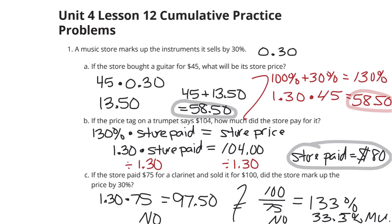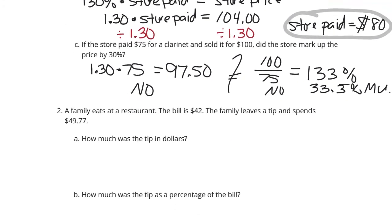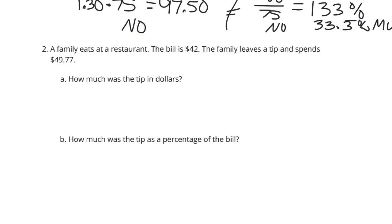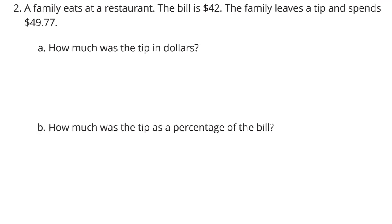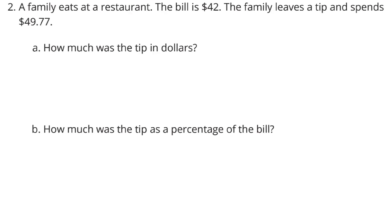Let's move on to question two. A family eats at a restaurant. The bill is $42. The family leaves a tip and spends $49.77. How much was the tip in dollars? Well, if we take our $49.77 and subtract the $42 for the bill, we would end up with $7.77.